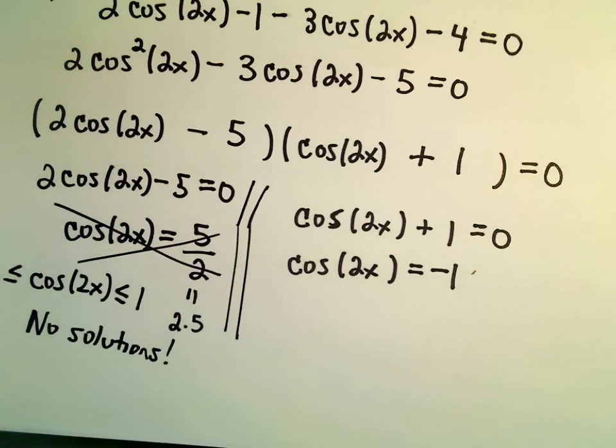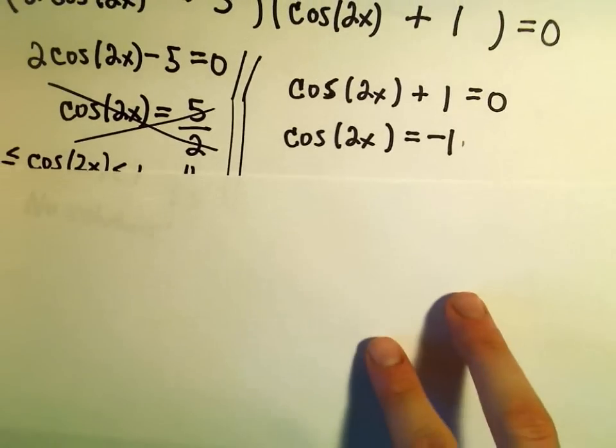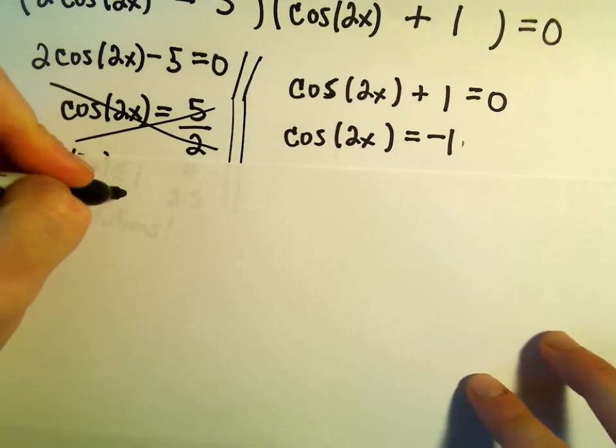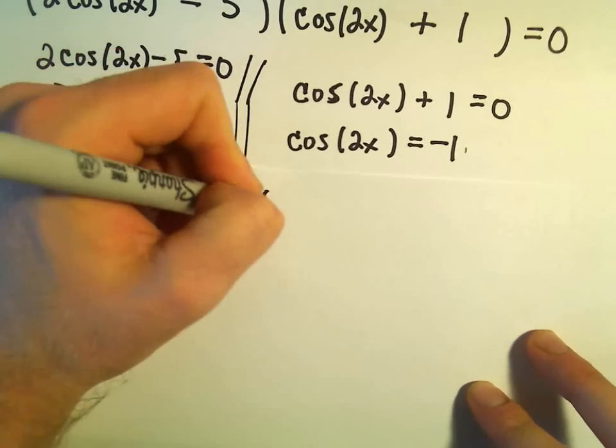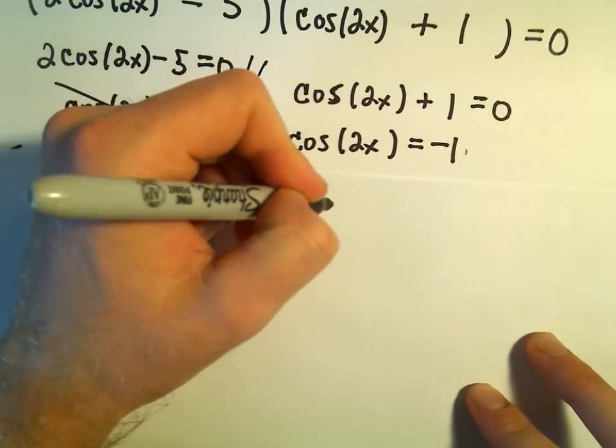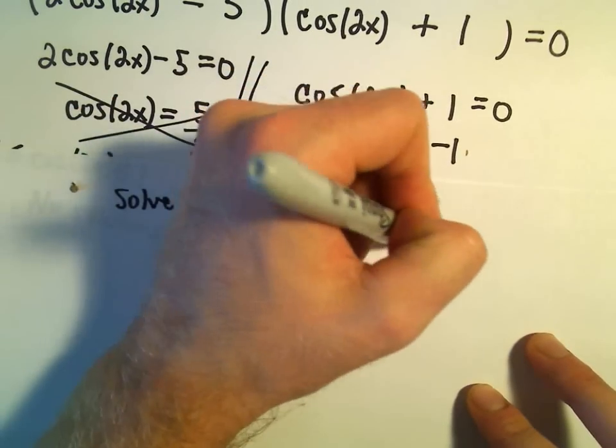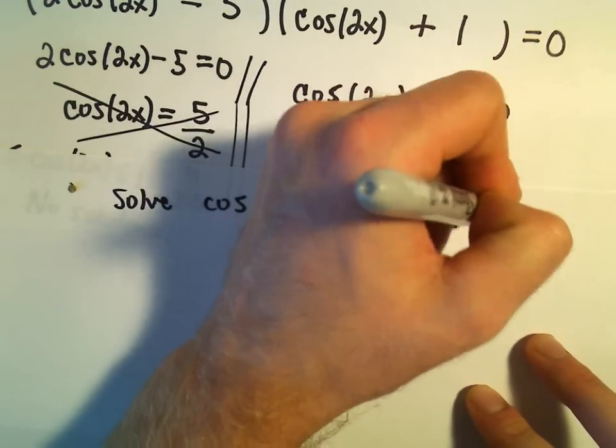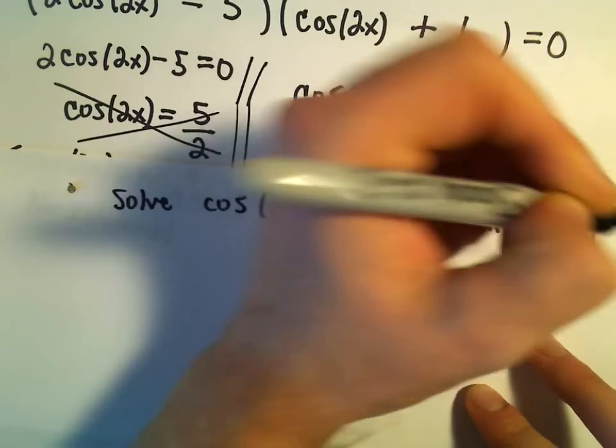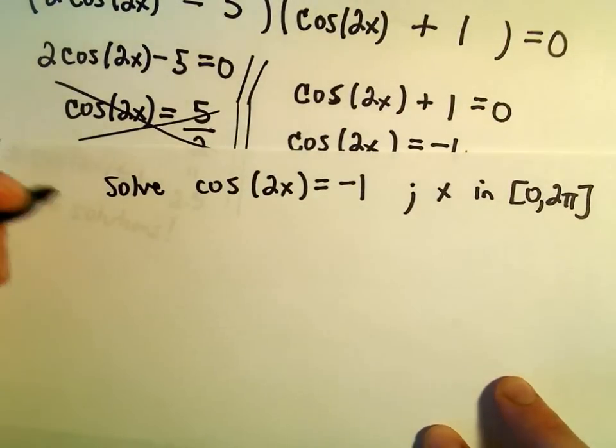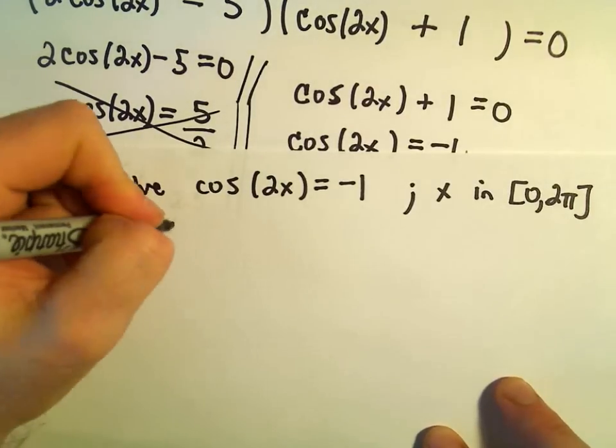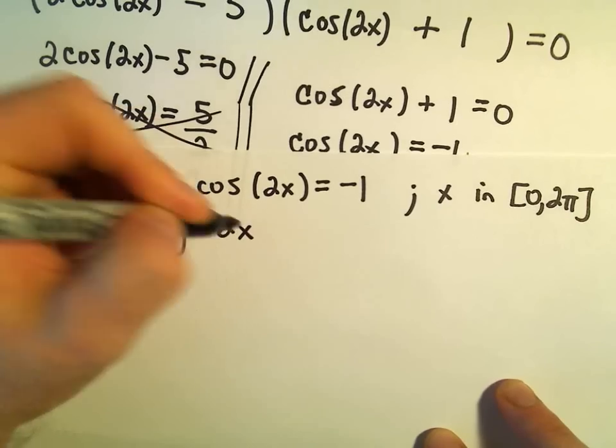So I'm going to do, like we've seen in some of the other examples, just to make sure that I get all the solutions. So we want to solve. So really the whole problem now has come down to solving cosine of 2x equals negative 1. And again, x, we want it to be in the interval 0 to 2 pi.